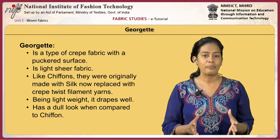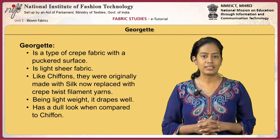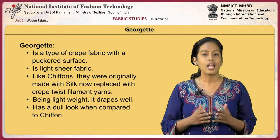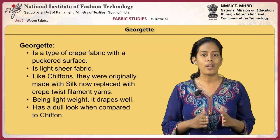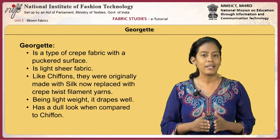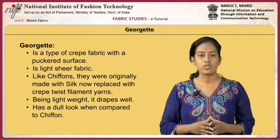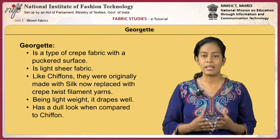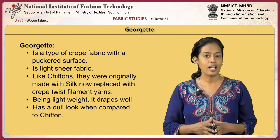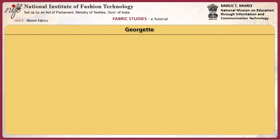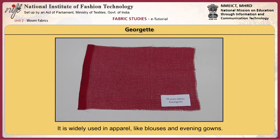Georgette is a type of crepe fabric with a puckered surface. It is a light sheer fabric. Like chiffons, georgette was originally made with silk and is now replaced with crepe twist filament yarns. Like chiffon and crepe, georgette being lightweight drapes well. Georgette has a dull look compared to chiffon. It is widely used in apparel like blouses and evening gowns. In georgette fabric, the yarn twist direction reverses for every alternate warp and weft, creating the puckered effect.